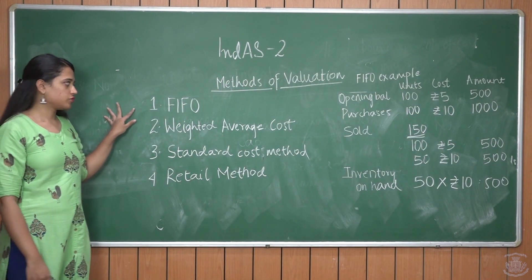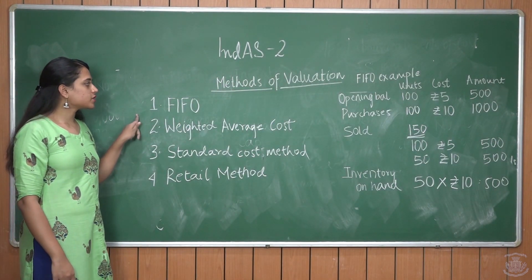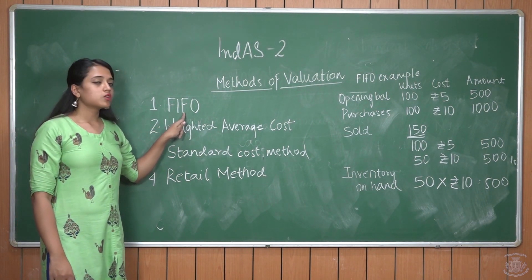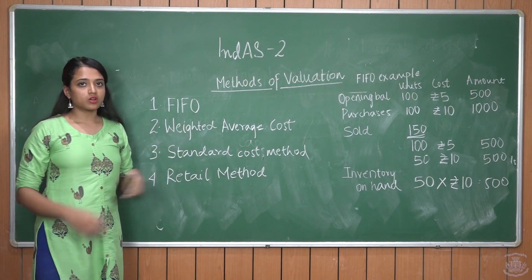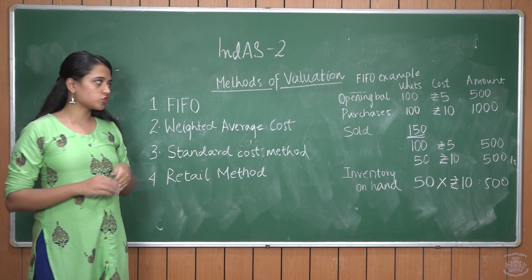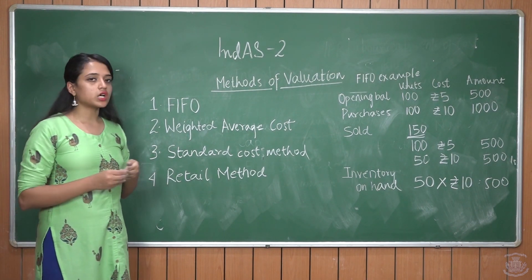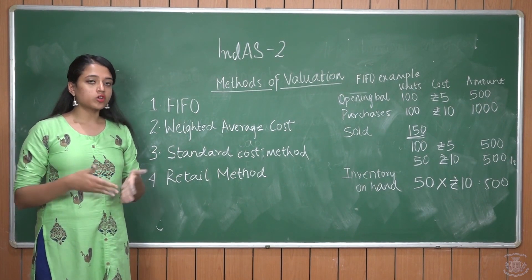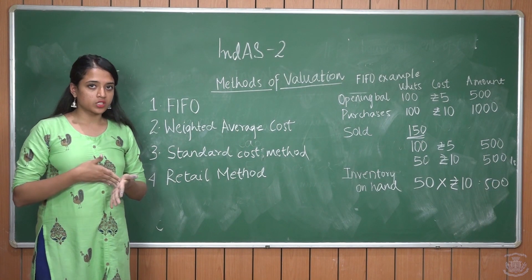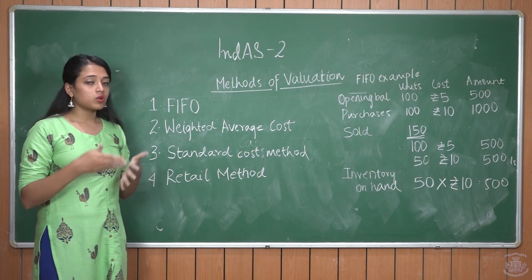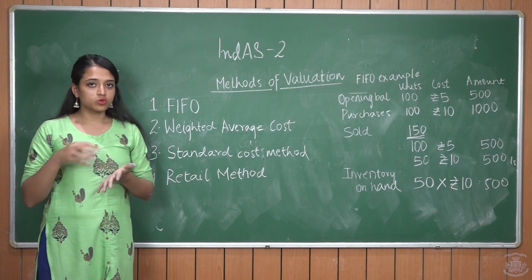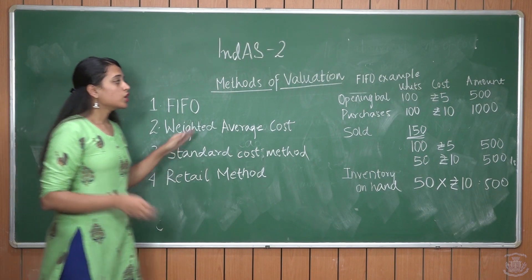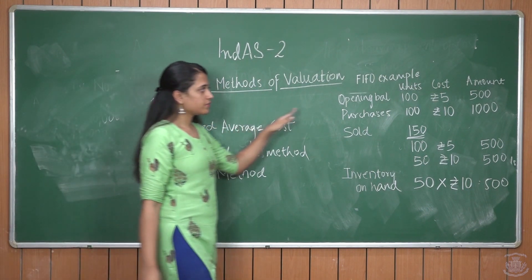Methods of valuation of inventory. The first method is FIFO — First In, First Out. FIFO is the commonly used method for valuation of inventory, which assumes that goods manufactured or purchased first are sold first. Hence, the newer goods bought later always remain in stock.